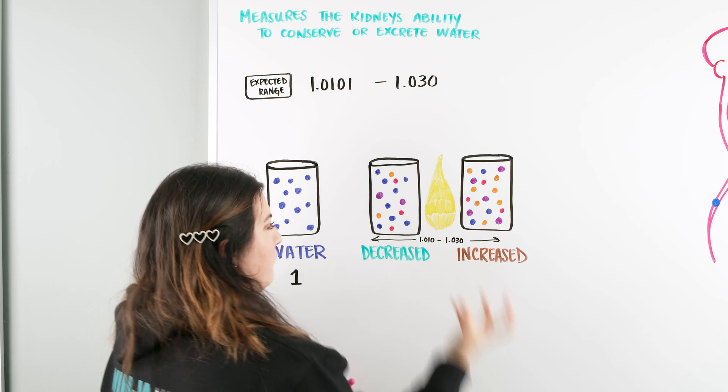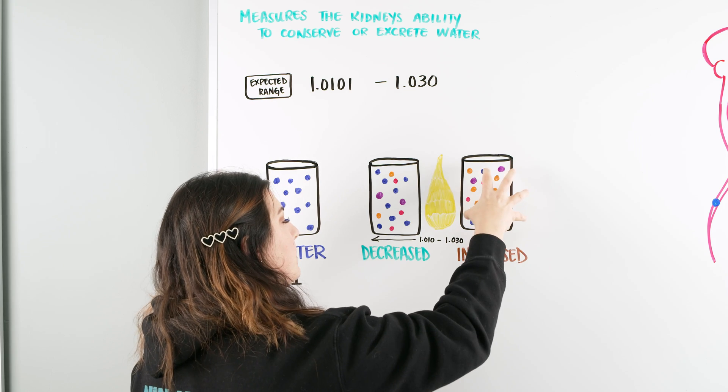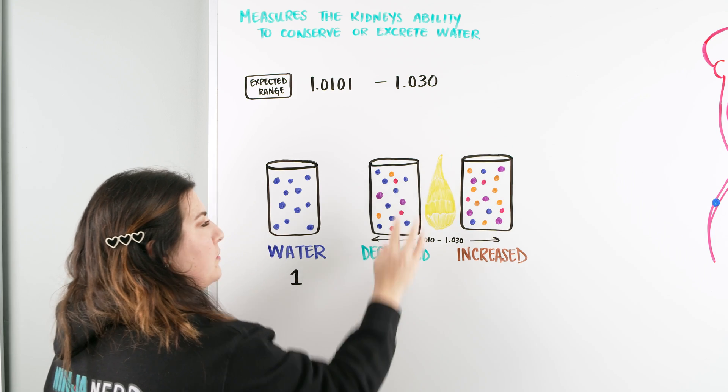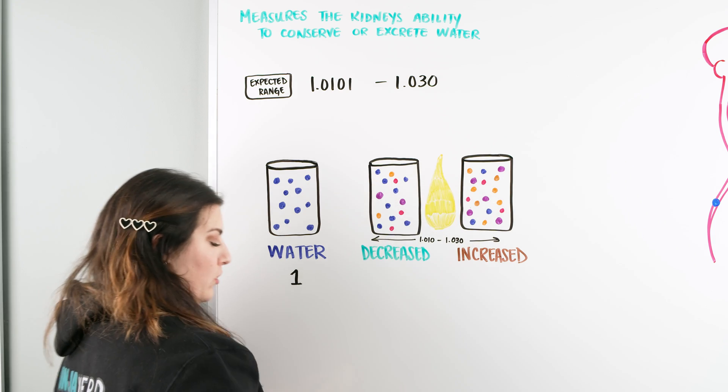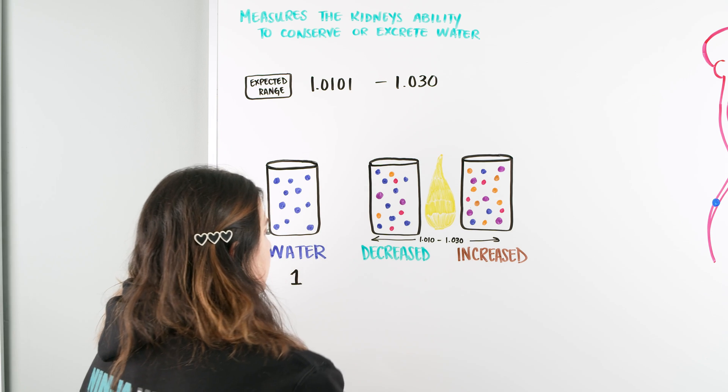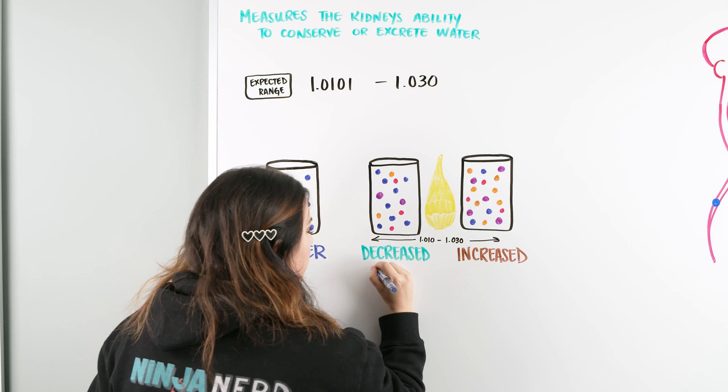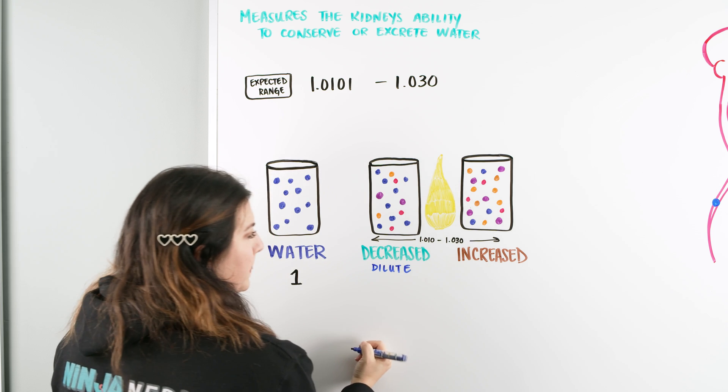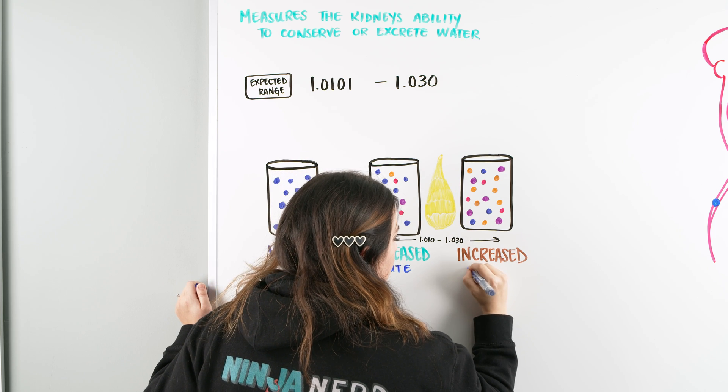So if it's increased, it means there's more stuff in it. Versus decreased means less stuff, closer to water, just being plain old H2O. So the way I like to think of it is decreased is more dilute water, where increased is more concentrated.